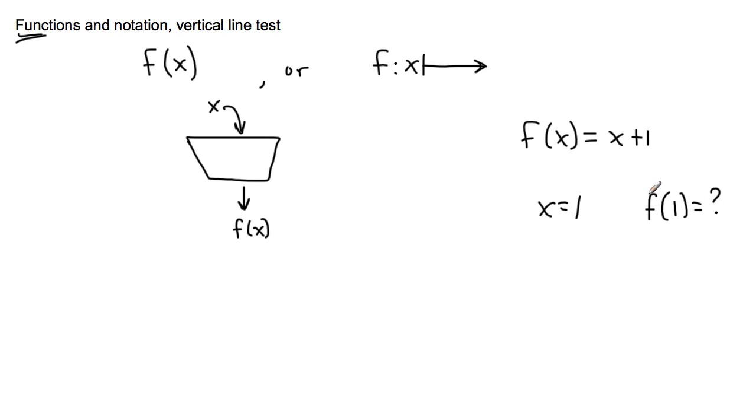In other words, I want to find out what I get when I put in something specific into this machine. I want to put in the number one. So f of one is everywhere I see an x, I just replace it with one. So instead of x I put in one, it's one plus one, therefore f of one equals two. That's an example of how to use functions.